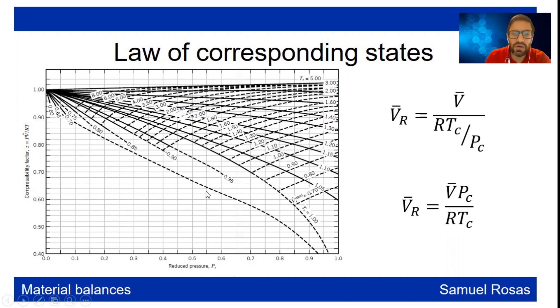You get one parameter and then you just look for the value of the pseudo-reduced volume, which are these kind of lines. These lines that are solid stand for the reduced temperature, but these ones that are dashed, they are going to be the pseudo-reduced ideal volume.